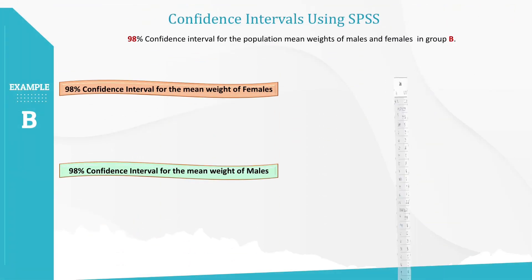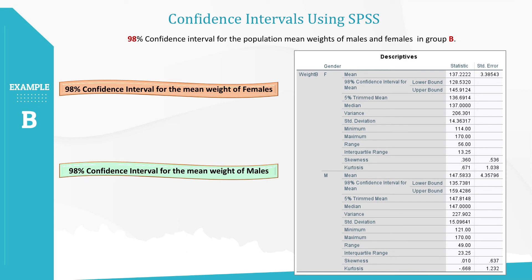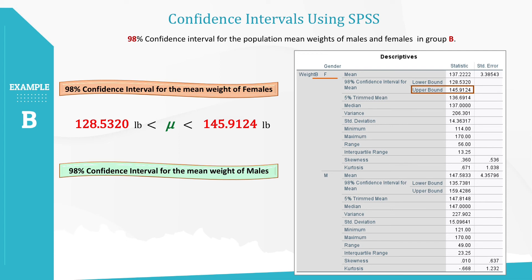Here is the output from SPSS. Let's write the confidence interval for the mean weight of each gender as before. Since we are estimating the population average, we use mu for the notation again. For females, the output shows a lower bound value, so it is the lower confidence limit value. Similarly, it shows the upper bound value in the output, which becomes the upper confidence limit value. So we are 98% confident that the population mean weight of females in Group B is between 128.5320 pounds and 145.9124 pounds.